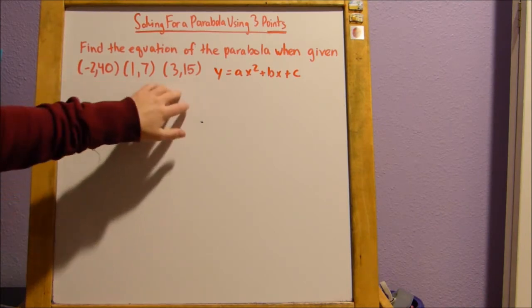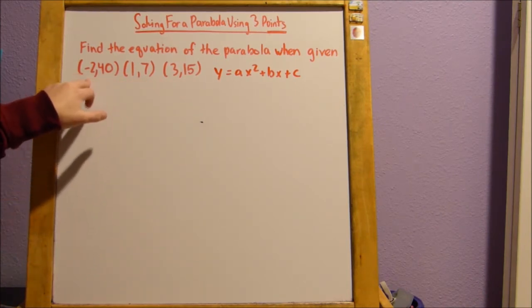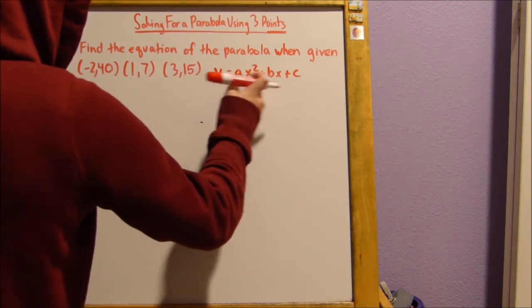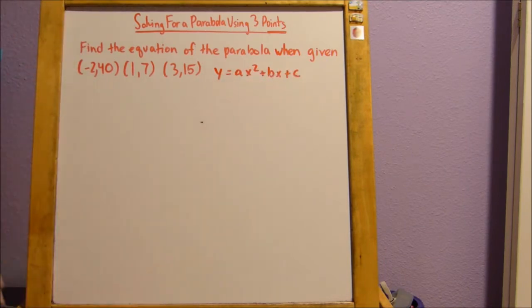In these three coordinate pairs, we know x, the first number of the coordinate pair, and we know y, the second number in the coordinate pair. We don't know a, b, or c, which is what we're going to solve for using matrices later on.